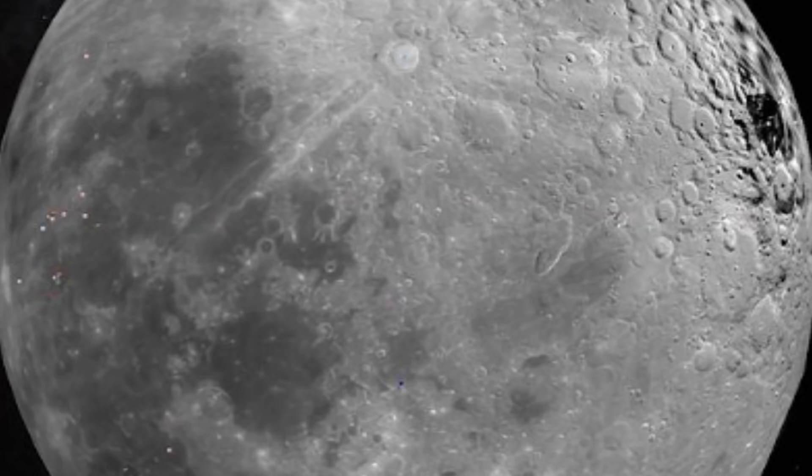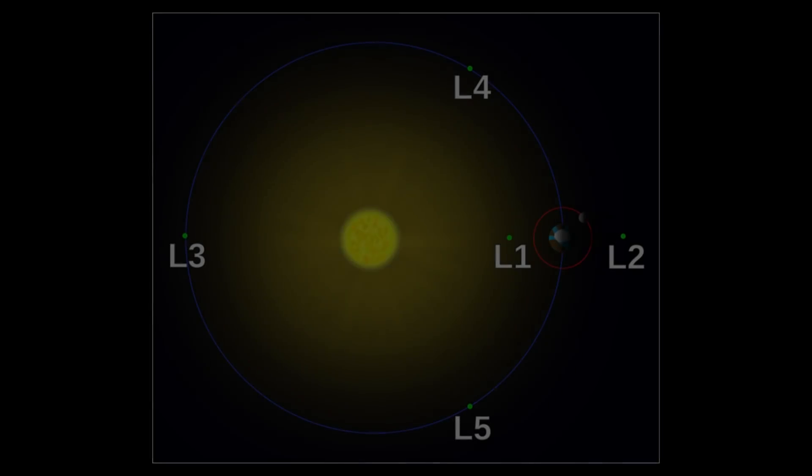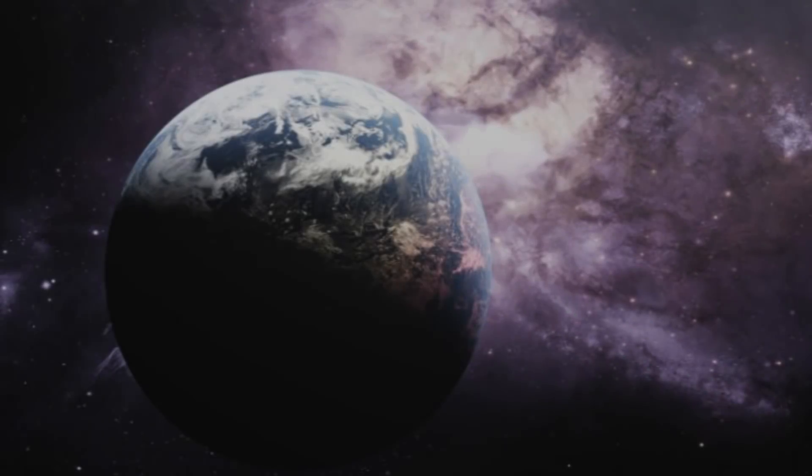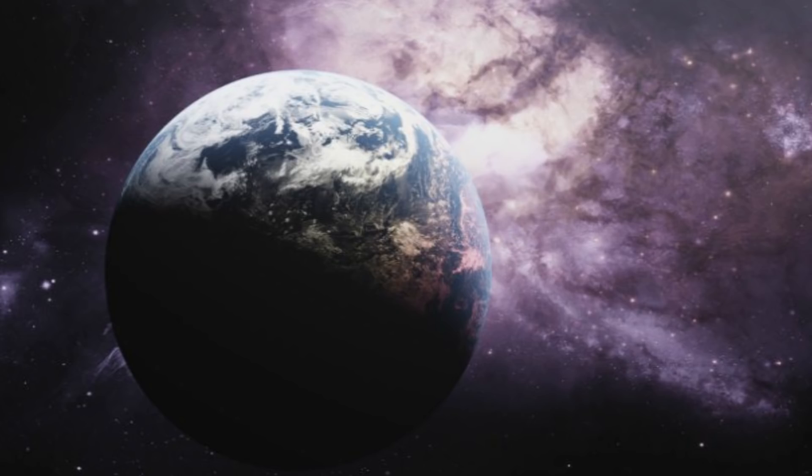Lagrangian points were used to predict areas around planets where moons could be found. Naturally, our moon Luna is in a Lagrange point in the orbit of our planet. However, in 1951, a professor named Joseph Witkowski observed that there were more Lagrange points surrounding the Earth. Therefore, he predicted that these spots could be home to more moons.